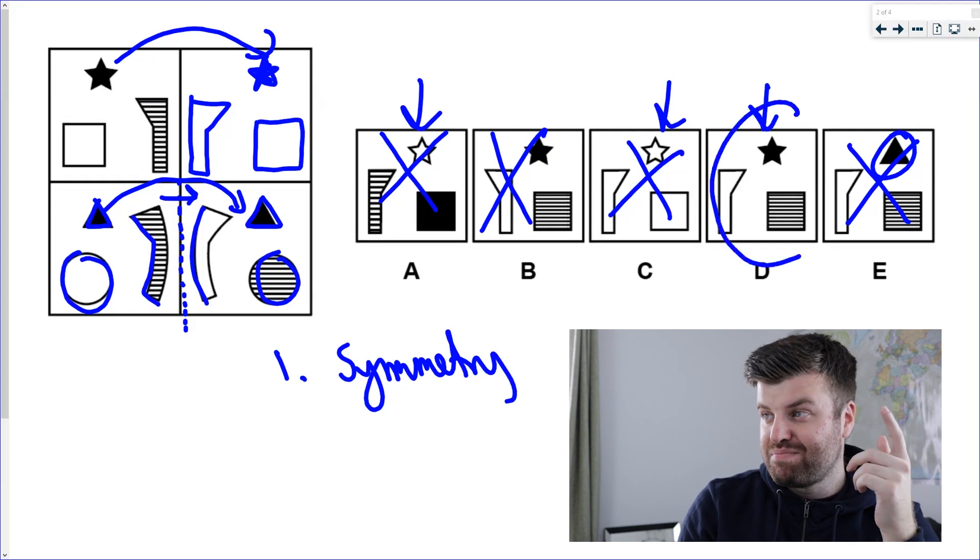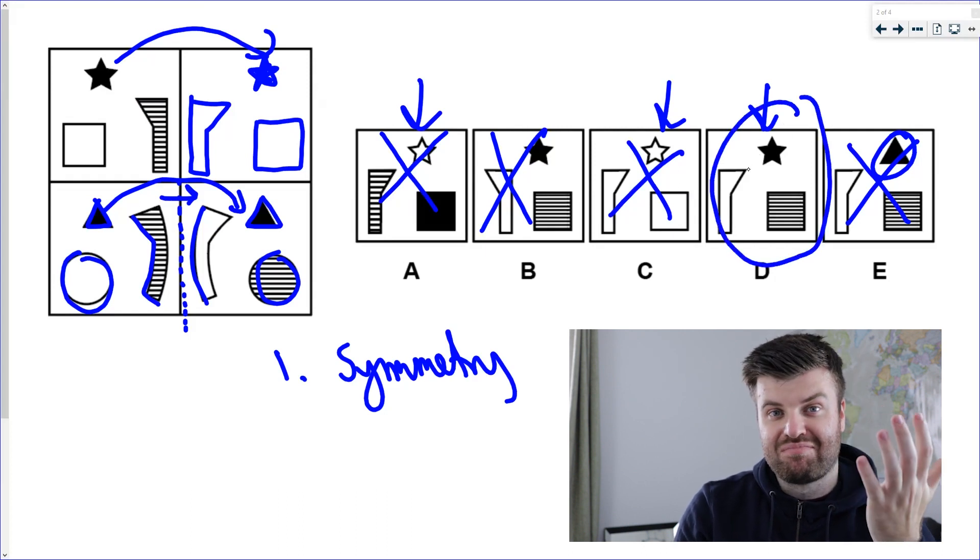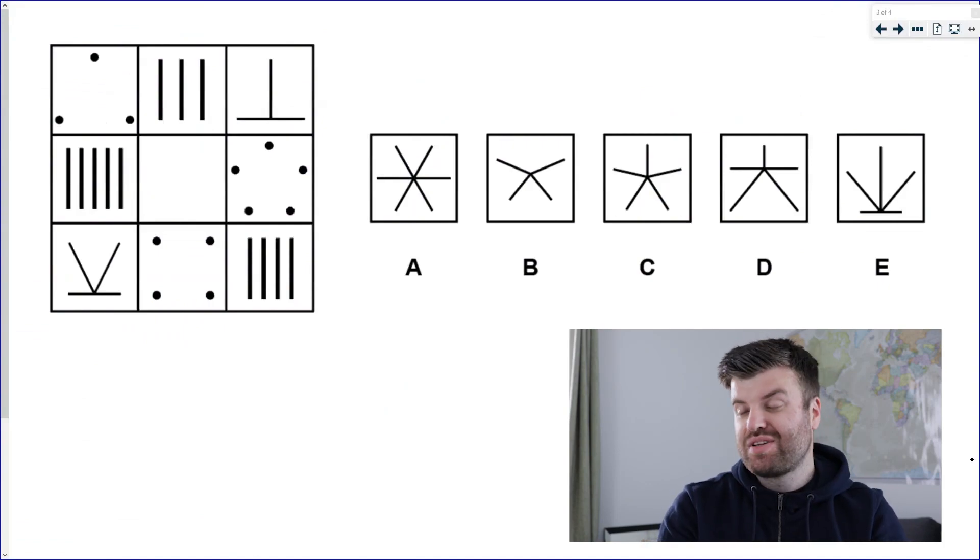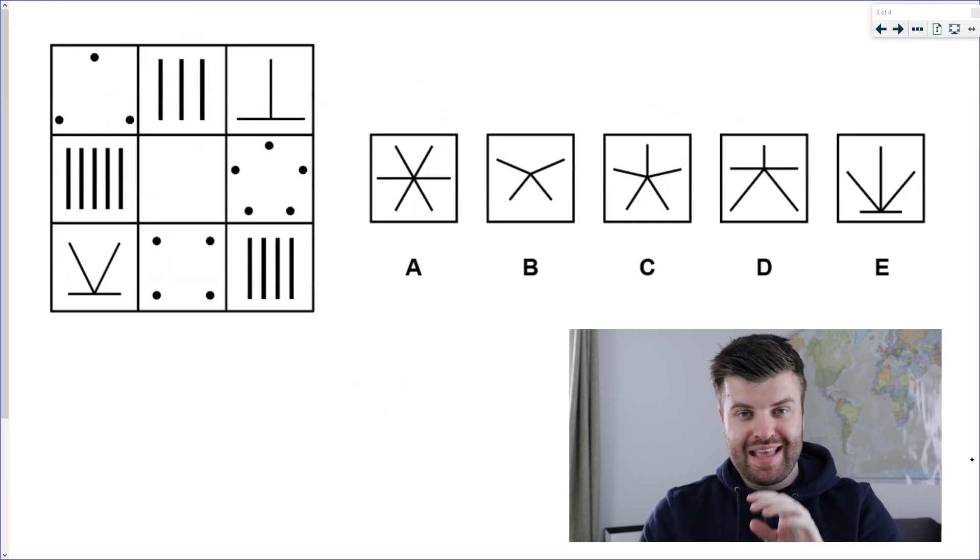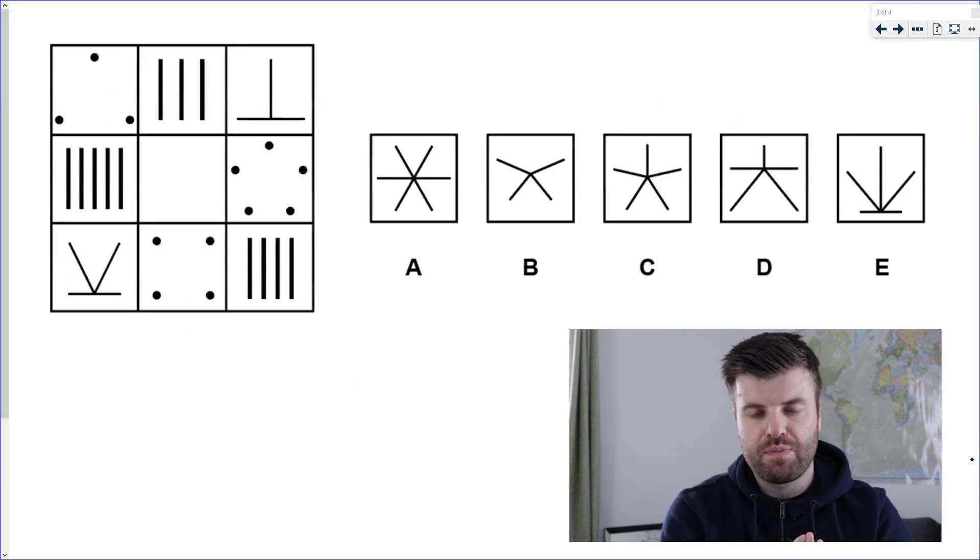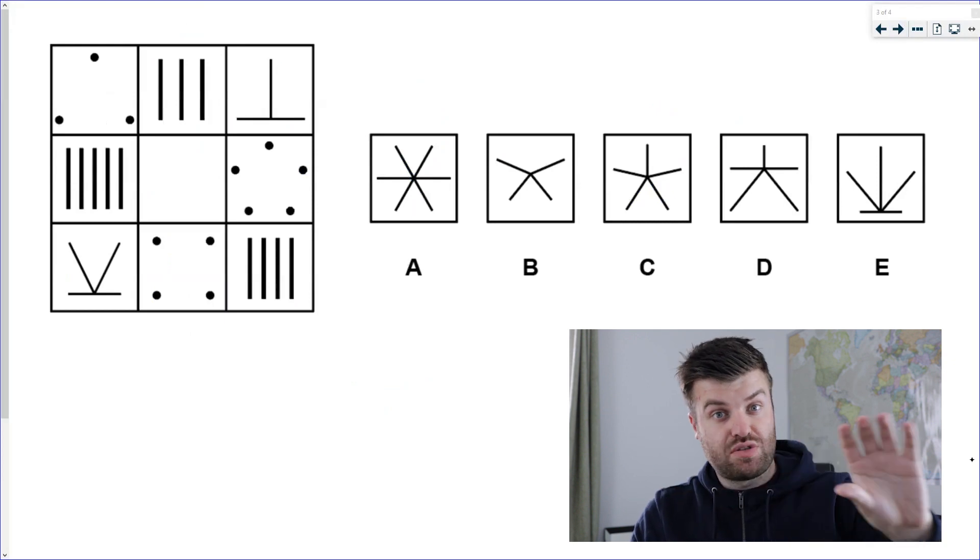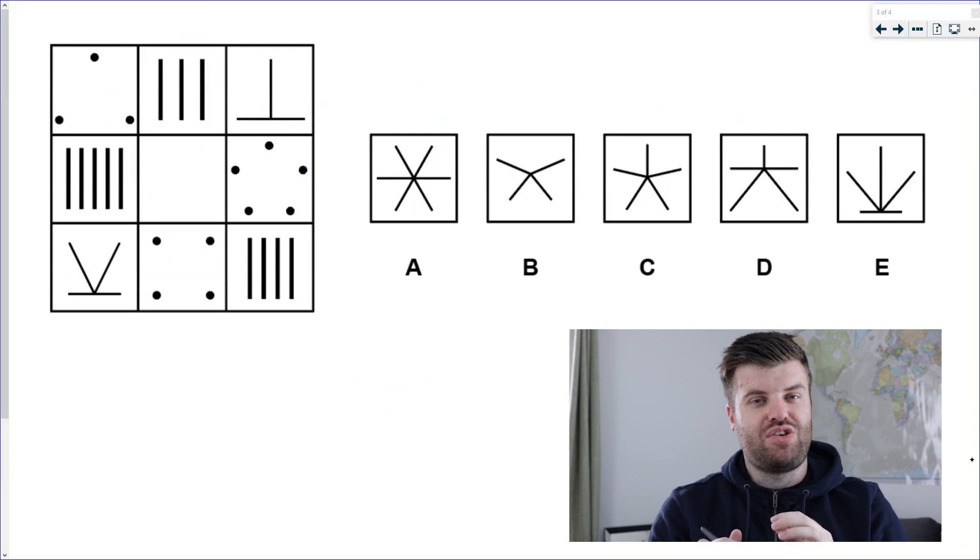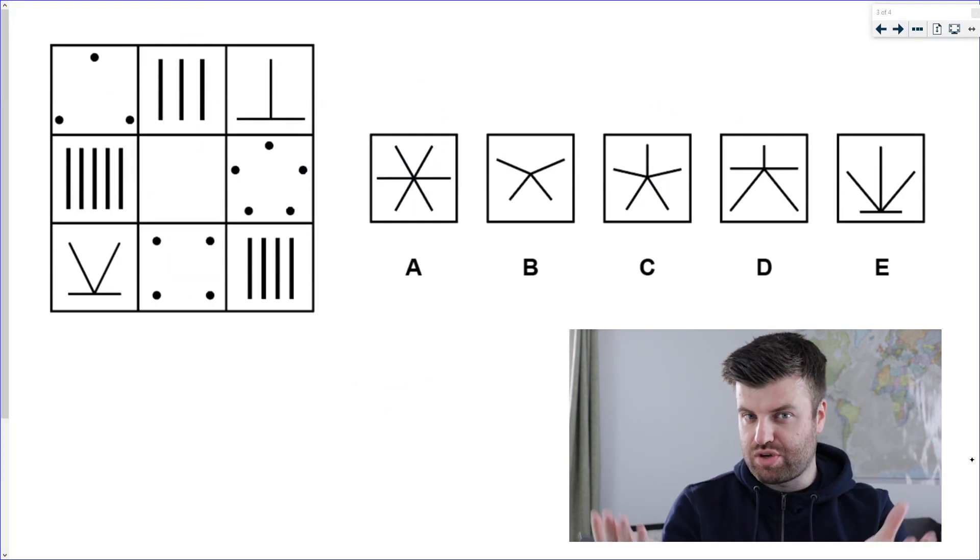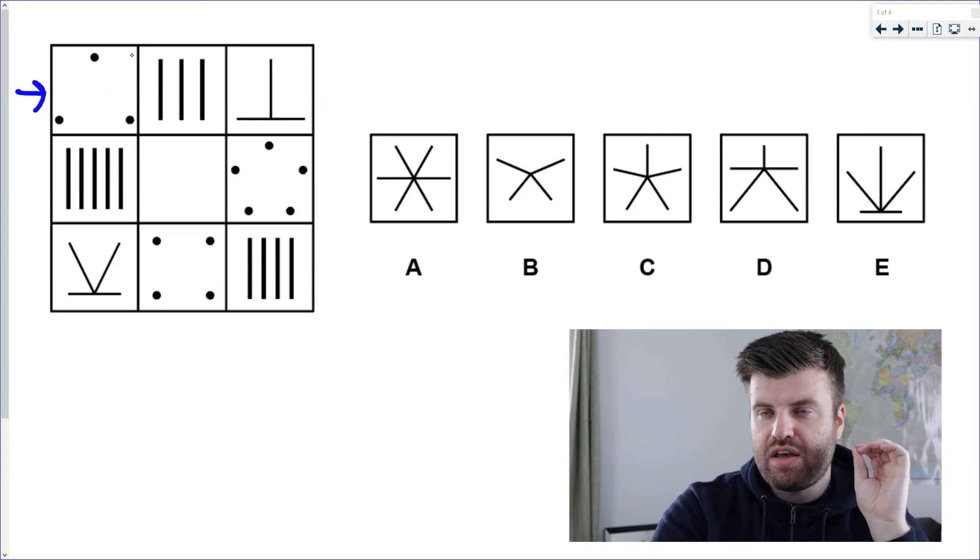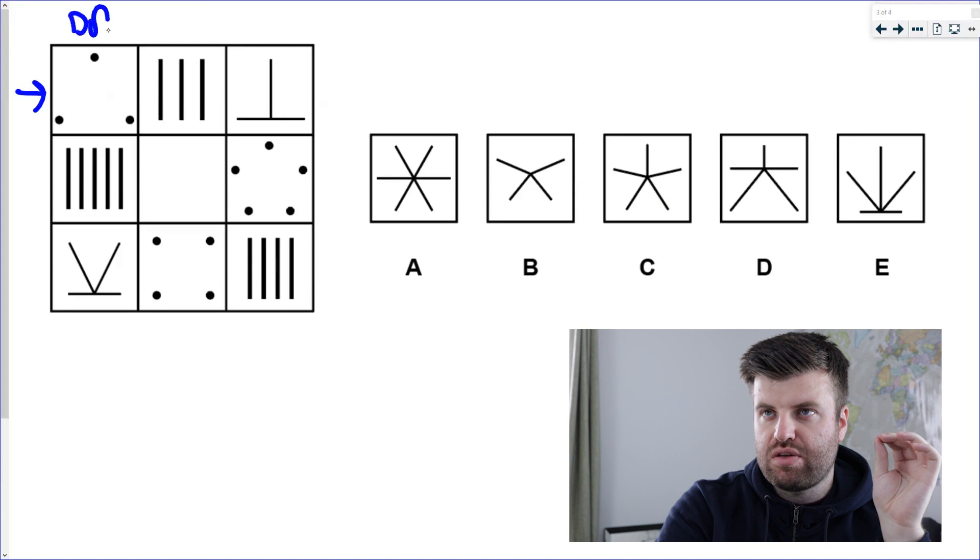Now don't be put off by this question. This one has nine tiles, but it's still the same system. We've got one tile missing; we need to figure out what's going on. This one is slightly different. Remember at the start of the video I said there are lots of things to look out for. We've looked mainly at transformations so far, going across or up or down. You can also get grid questions that use a set, so each row could be a set. I'm going to show you exactly what I mean here.